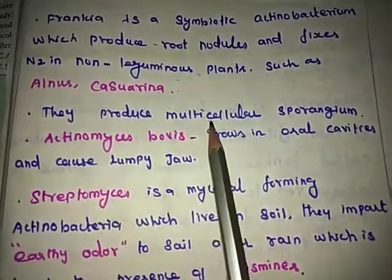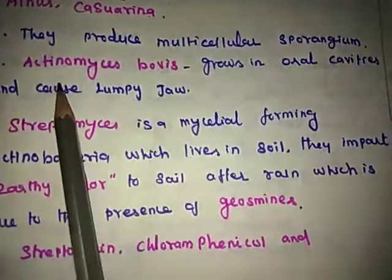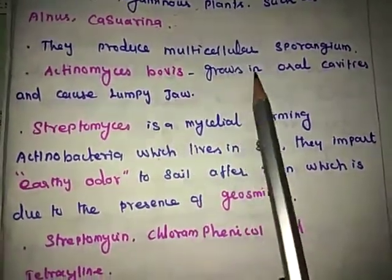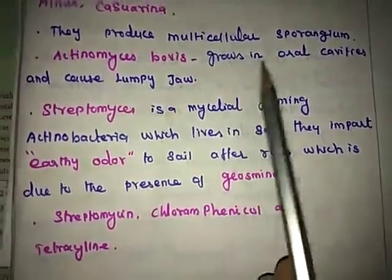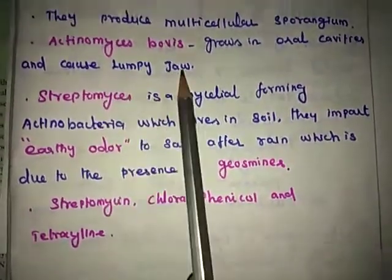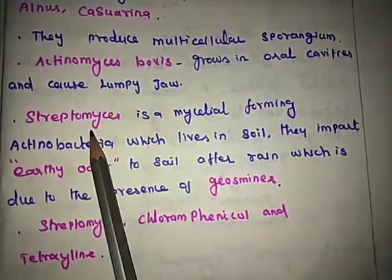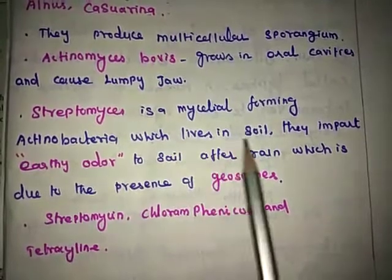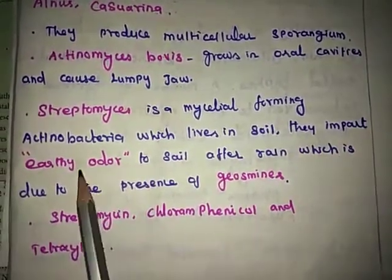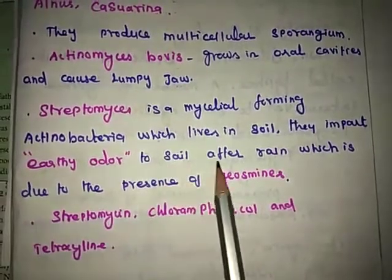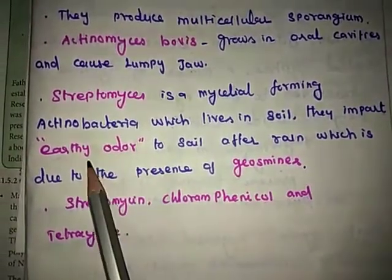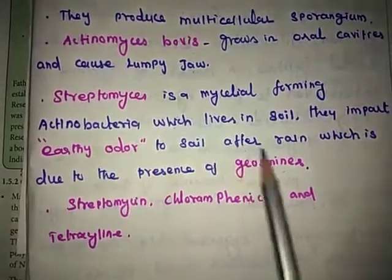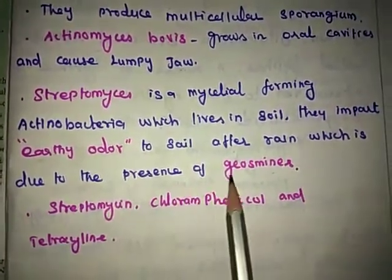They produce multicellular sporangia. Actinomyces bovis grows in oral cavities and causes lumpy jaw. Streptomyces is a mycelial-forming Actinobacteria which lives in soil and imparts an earthy odor to soil after rain, which is due to the presence of geosmin.